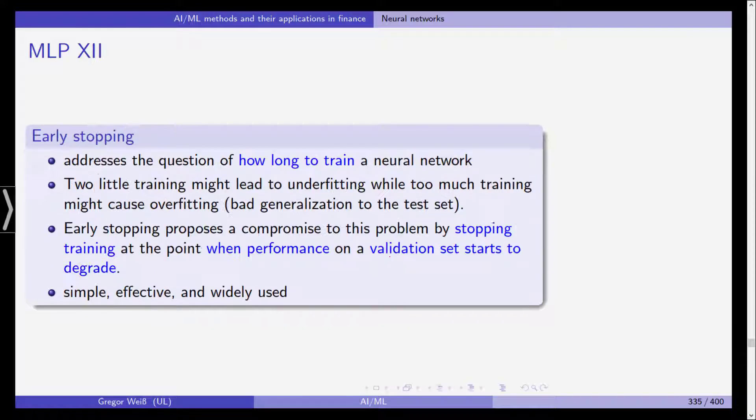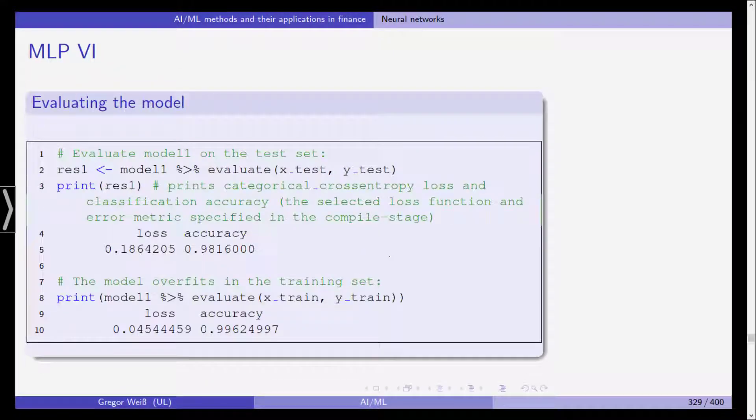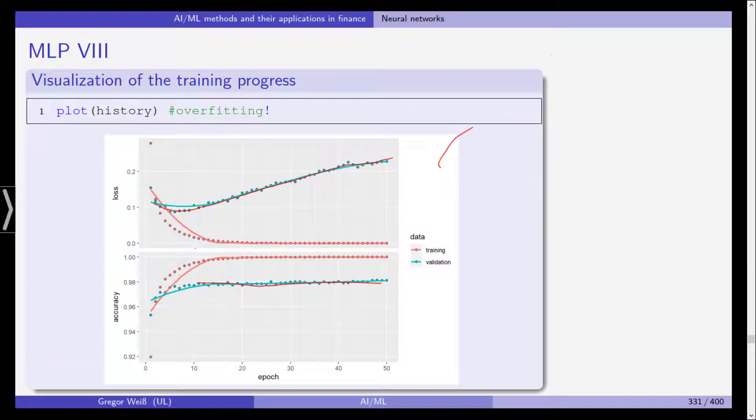Now early stopping as the second alternative for regularization of the neural network addresses the question of how long to train a neural network. We can see here that at some point probably here we should have stopped. The accuracy in the training sample will only increase slightly but everything that follows now is an increase in the loss for the validation set.